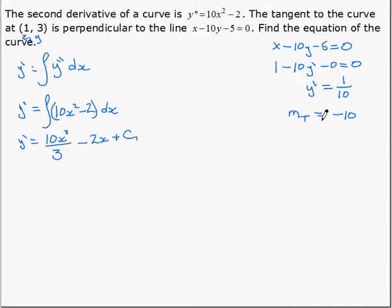Continuing then, we put in negative 10 for y prime, 1 for x, so 10 over 3 times 1 cubed minus 2 times 1 plus c1, and rearranging tells us c1 is equal to negative 34 over 3.